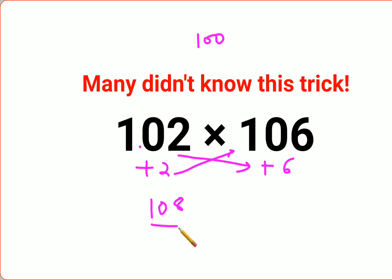The second part will be just multiplying this difference which is 2 and 6. 2 and 6 gets you 12. The answer for this question is 10812.